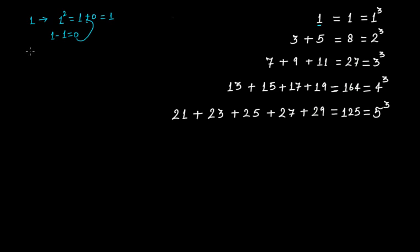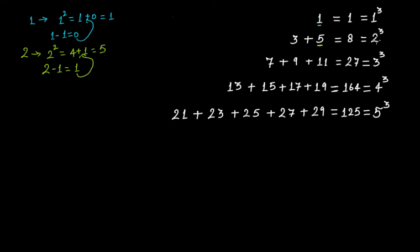For two cubed: what is two squared? Two squared is four. What is two minus one? That is one. Add this one to four — you get five. So five is the largest odd number in the sequence. Since this is two, we need two consecutive odd numbers, so three plus five.